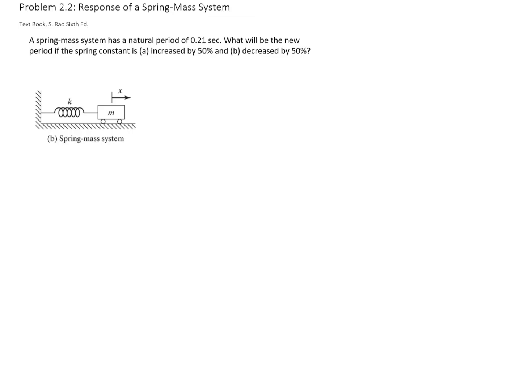So we have the period, the natural period is 0.21 seconds. We know that the natural period relates to the natural frequency as 2π over the period. And we also know that the natural frequency is equal to K, which is the constant of the spring, divided by the mass of the system.